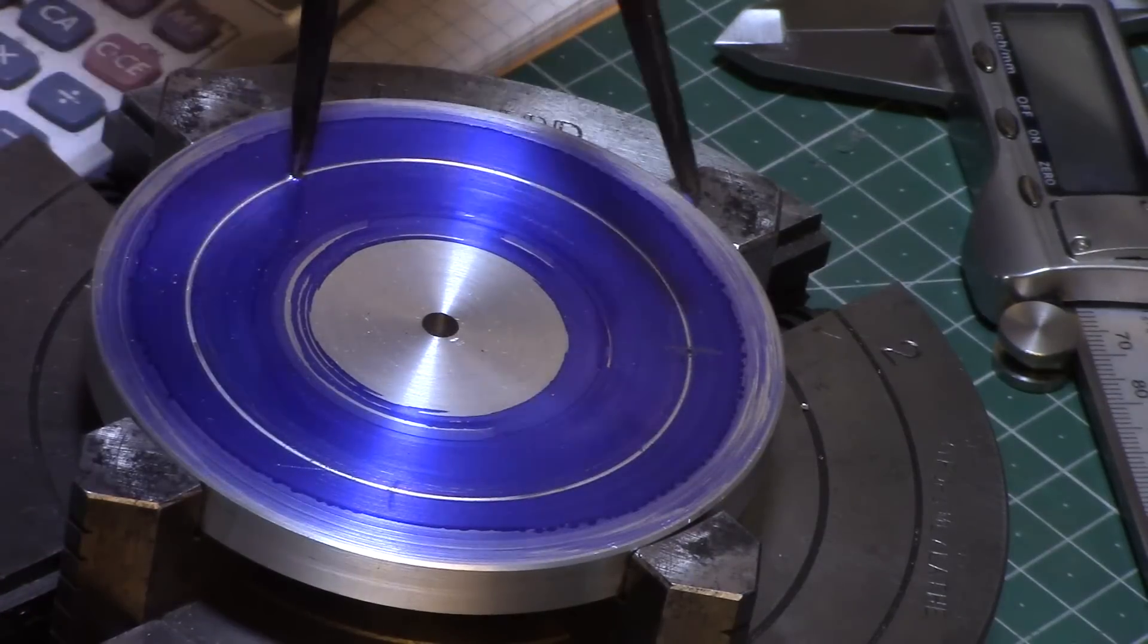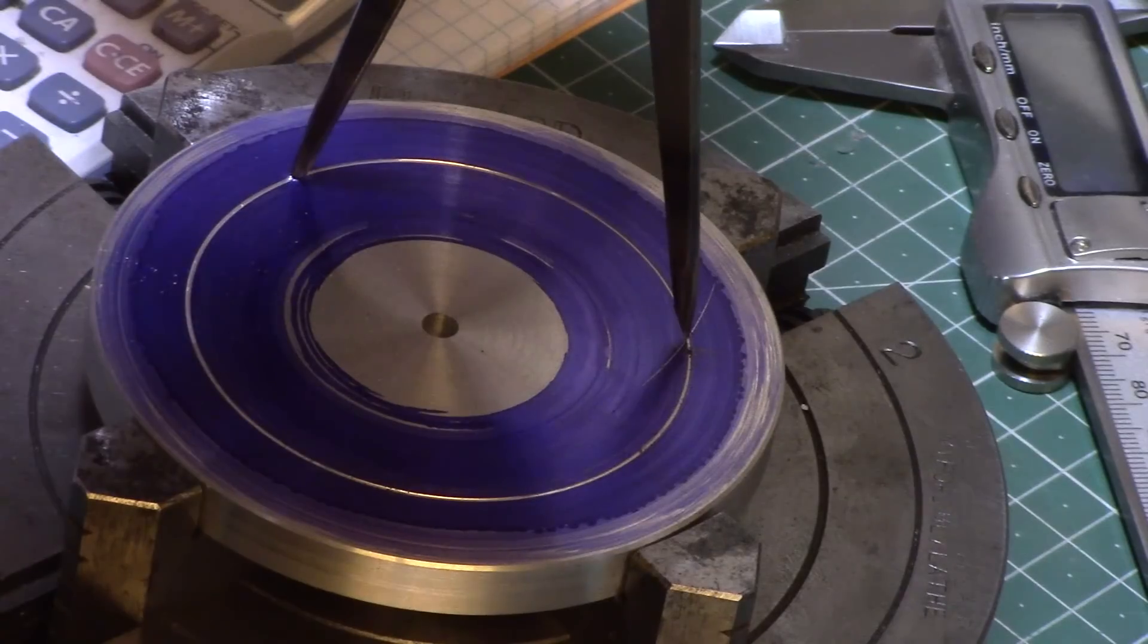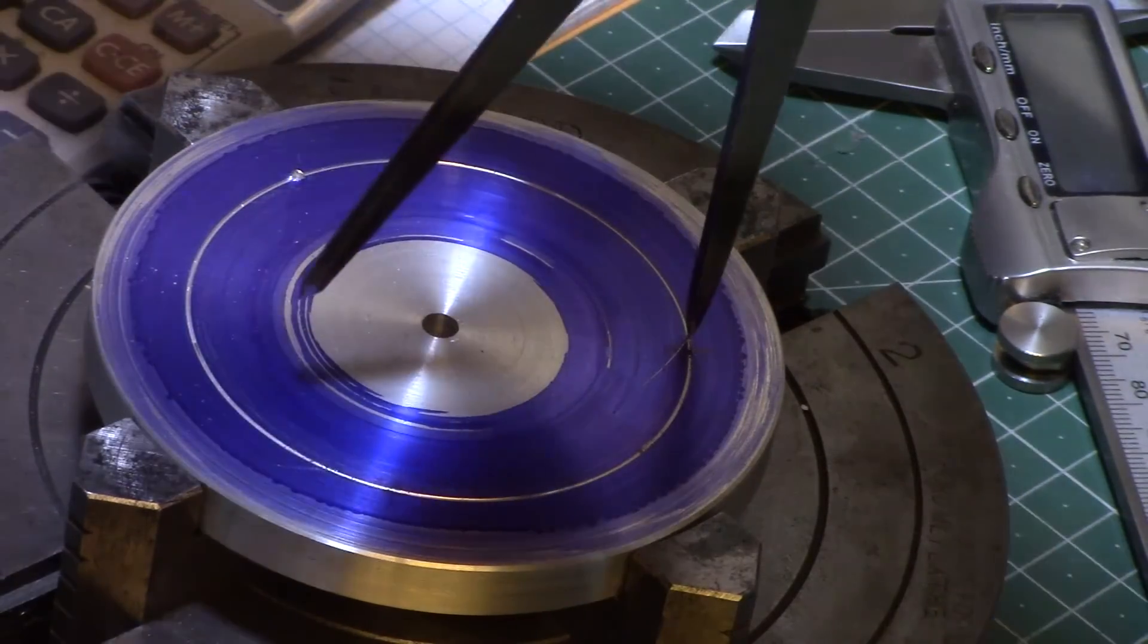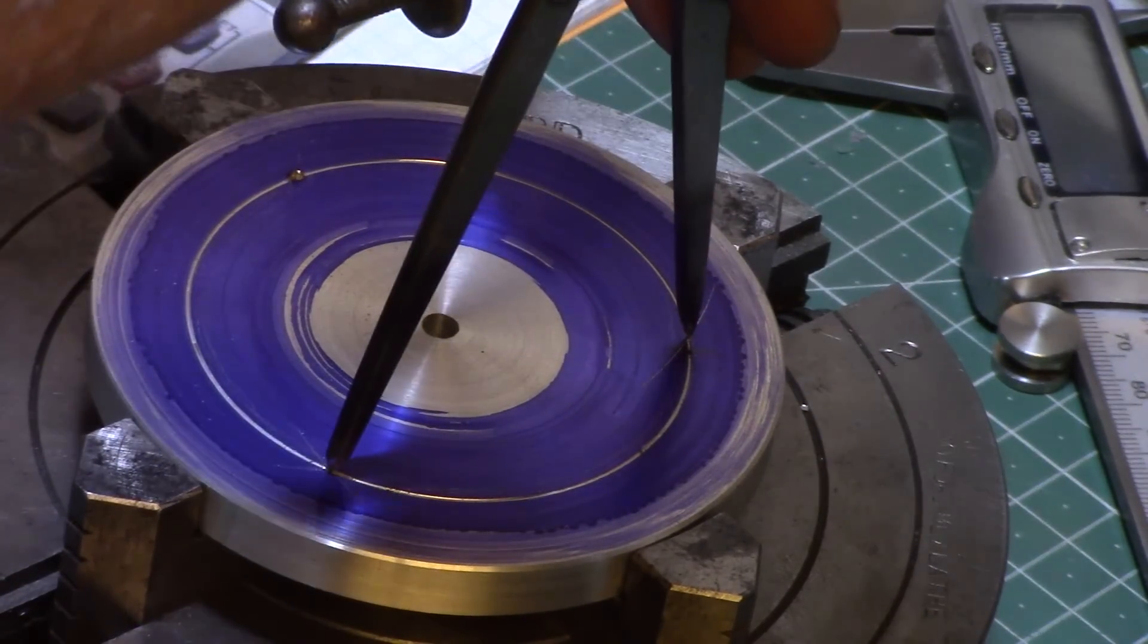Now I can scribe across the V groove in both directions of the other two hole placements, ready for center punching at the intersections of the scribes.